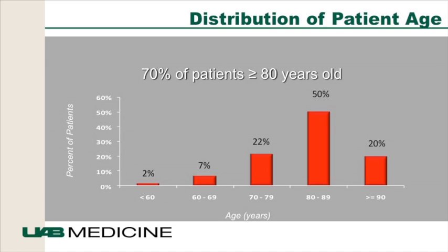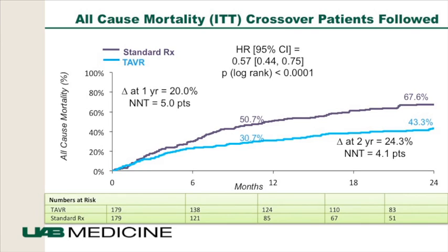The distribution of patients: 70% were more than 80 years old, so these were really old patients. At one year, there was a 20% absolute risk reduction with transcatheter valve replacement: 30% of TAVR patients were dead at one year compared to 50% with medical therapy, and this benefit was sustained at two years. This was the first trial to show such significant benefit of an intervention in cardiology — a number needed to treat of five patients to save a life.